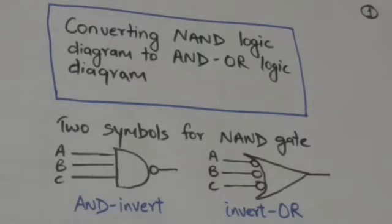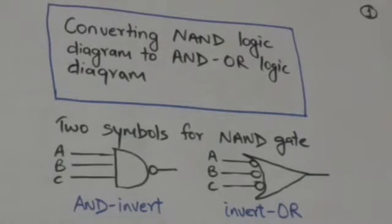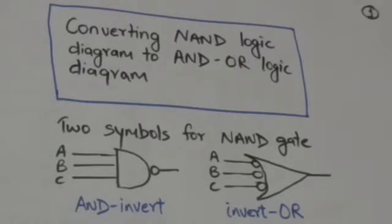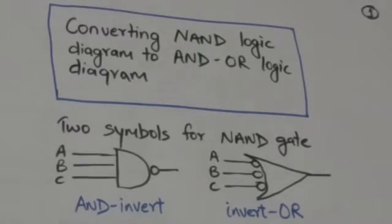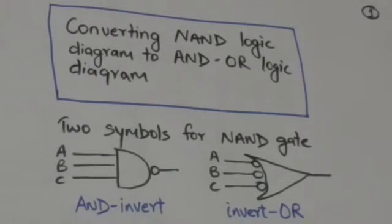To convert a NAND logic diagram to an AND-OR logic diagram, first, in alternate levels of gates we will change the symbols of NAND gates from AND-invert to invert-OR, starting from the last level. Second, pairs of circles along the same line will be removed, because circles perform complement operation and two circles along the same line represent double complementation.